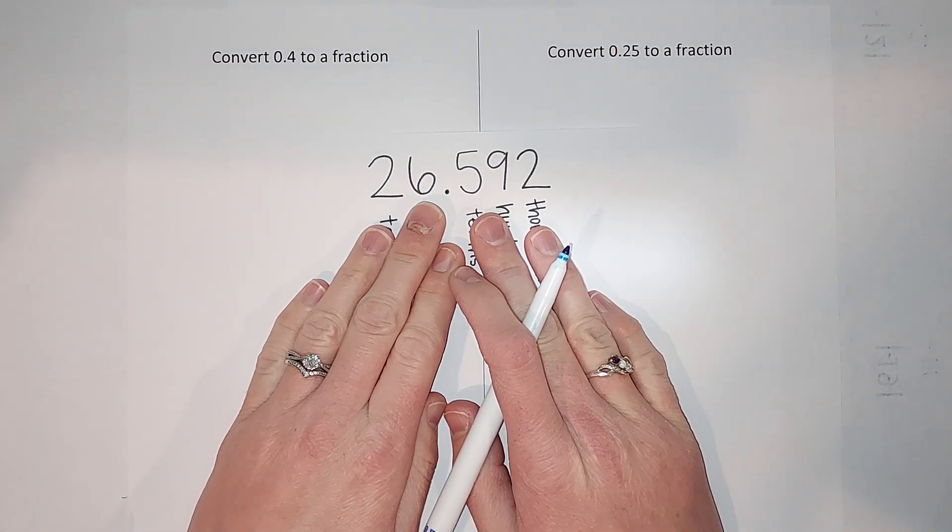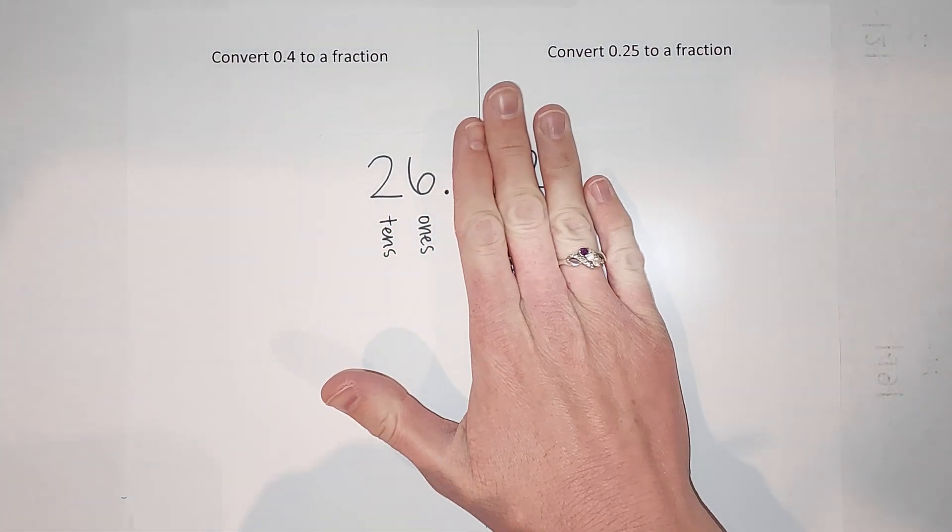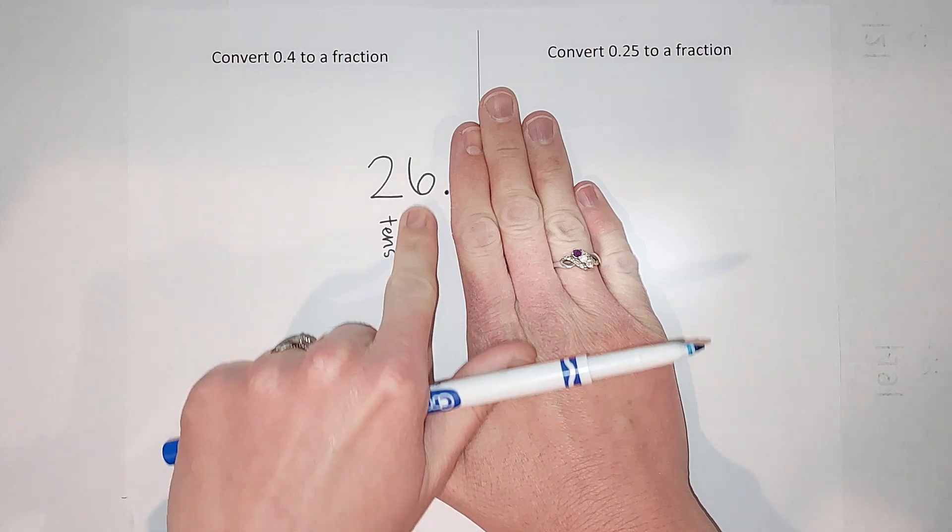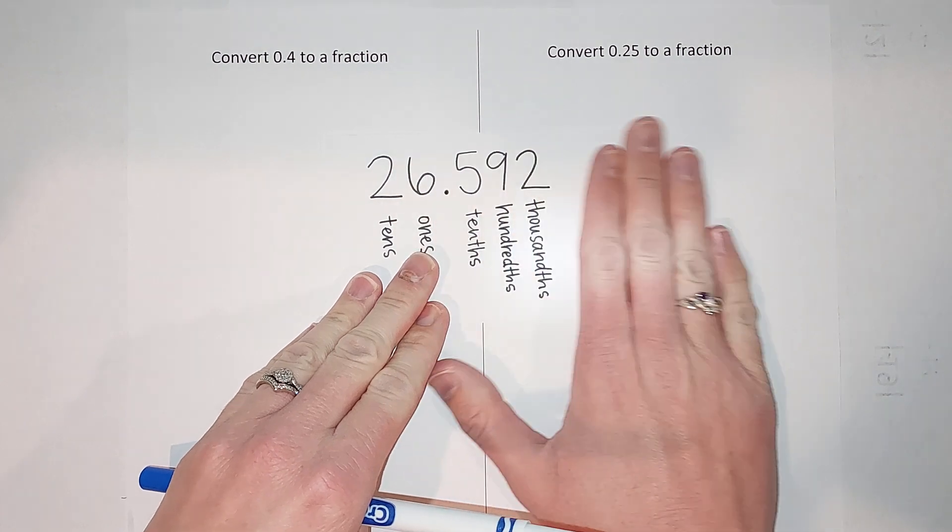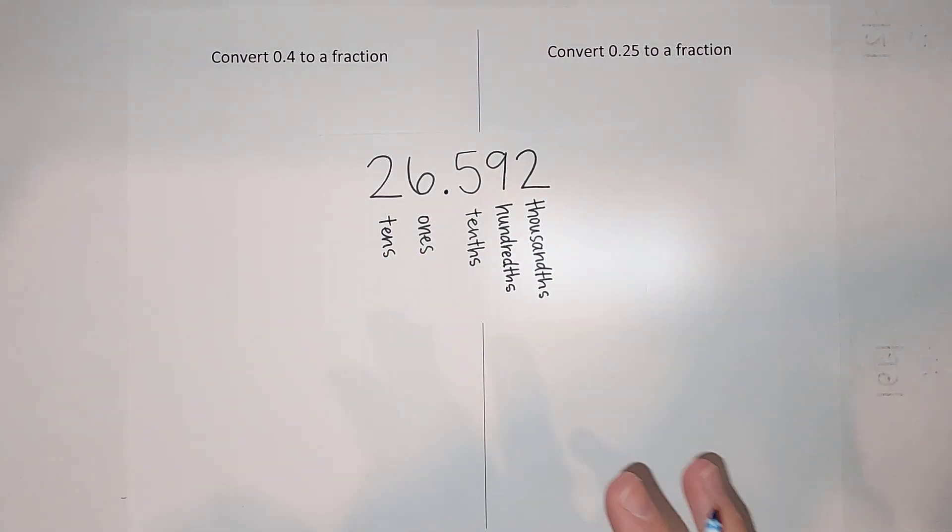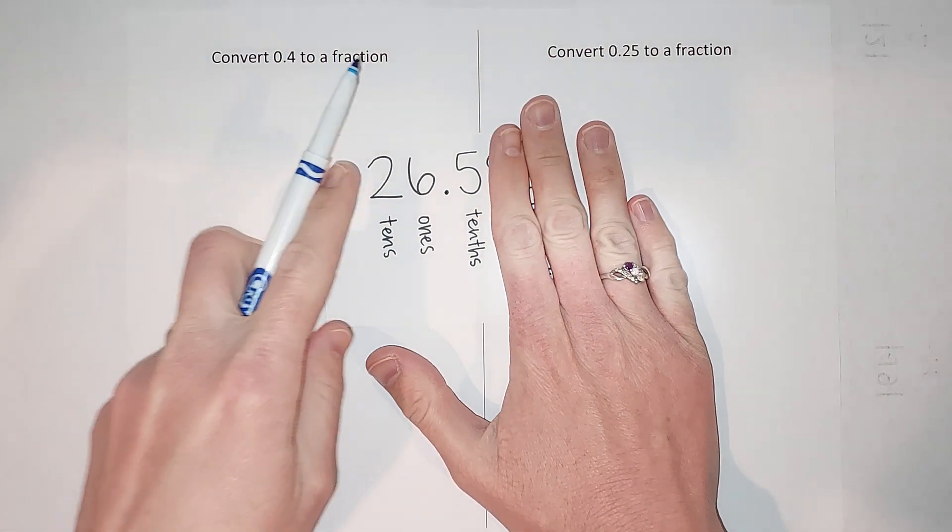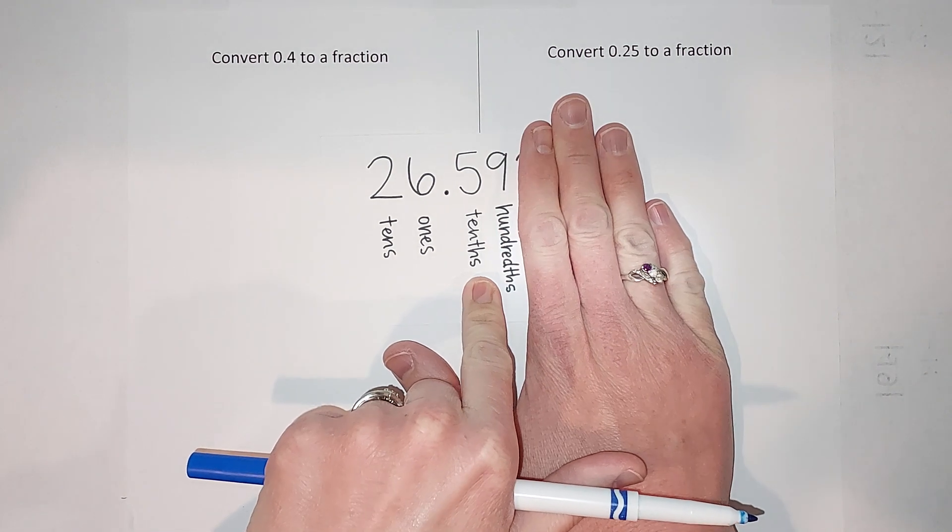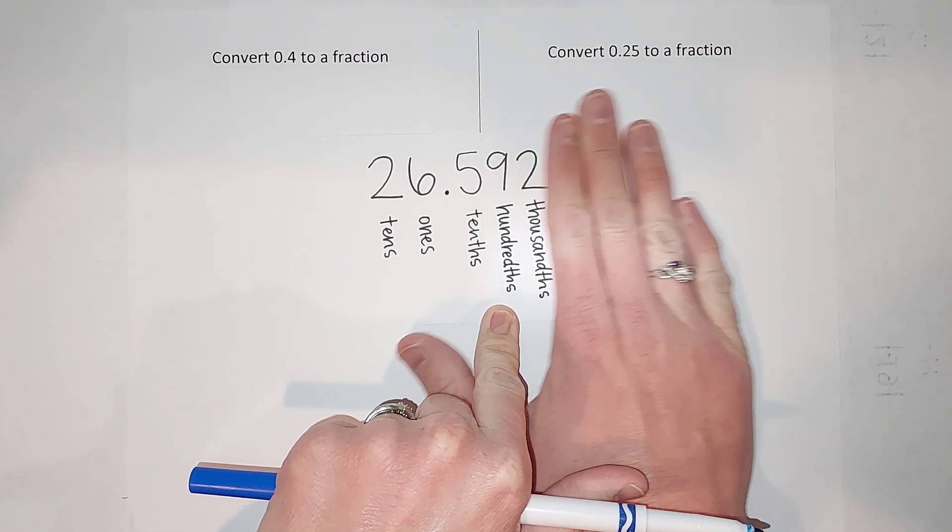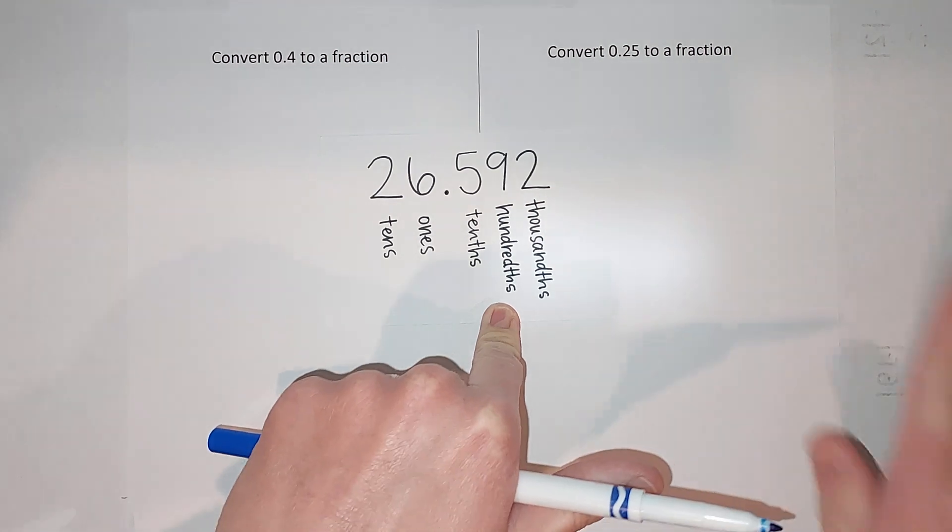26.592. We're pretty familiar with this side, right? This is my ones, my tens, hundreds, thousands, keeps going. Now on the other side of the decimal, sometimes we get a little, I don't know if scared's the right word, but we're just not as familiar with it. The first number after our decimal is the tenths place, the second is the hundredths, and the thousandths, and it keeps going.